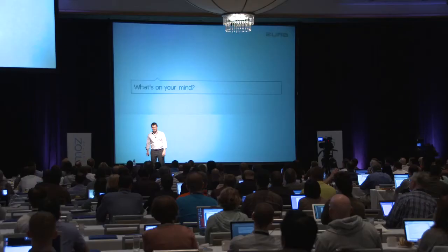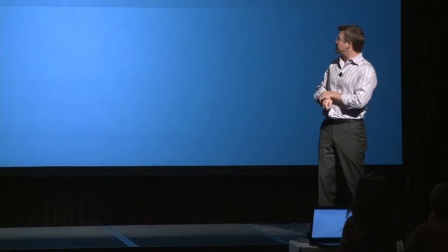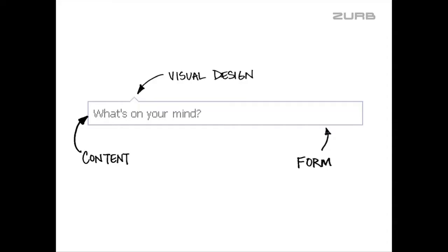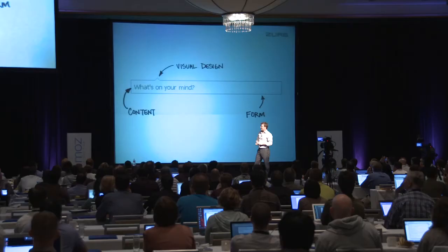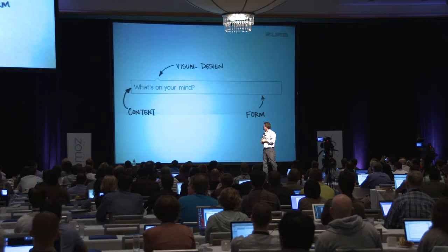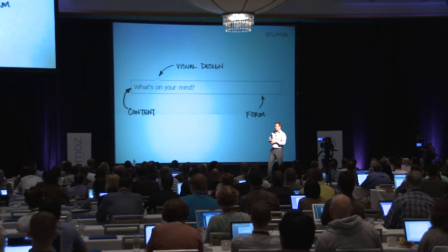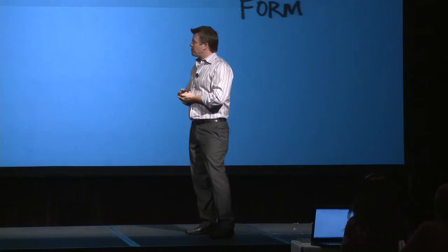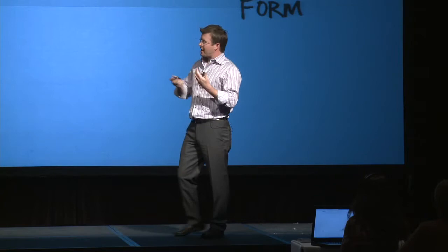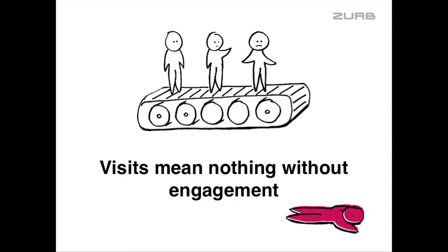This is Facebook's main visual design element on the site — the cleanest, simplest example of taking all three concepts and playing them into one. The little triangle — actually 10 pixels — tells you what type of content you're going to upload; it serves as a navigation element. 'What's on your mind?' is the content — it gives you a sense of what you're supposed to do, asking a directive question. Then there's a form element where you can put a cursor and start typing. All three play into a small space with minimal visual design, minimal content, and a very minimal form.